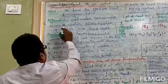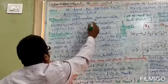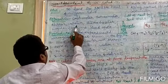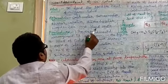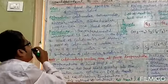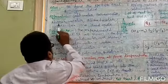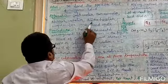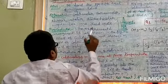Apparatus: Calorimeter, thermometer, stirrer, water, steam heater, wooden box, and lead shots.